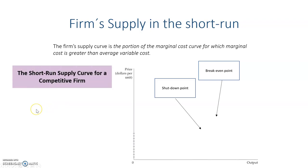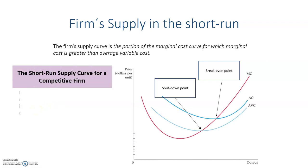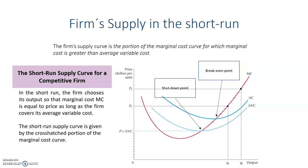To begin with firm supply in the short run, as we have seen in the last video, there are two main points to see if the firm is having profits or not and to see if it's going to keep producing. The first point is the break-even point, which is when the price and the marginal cost at the maximization coincide with the average total cost. At this point, profits will be zero; however, in the short run the firm is going to keep producing.